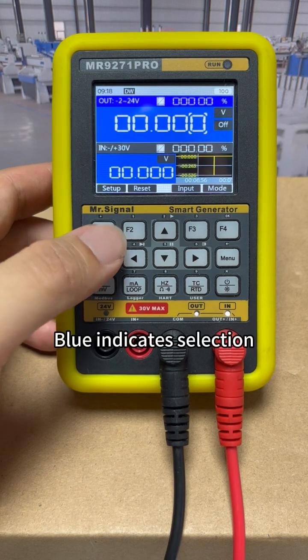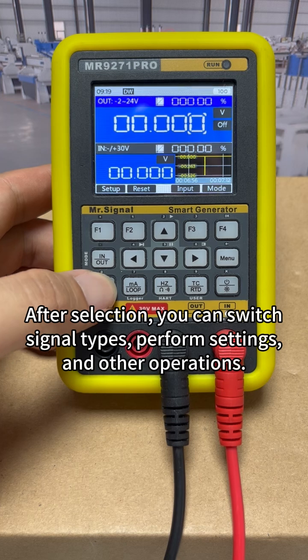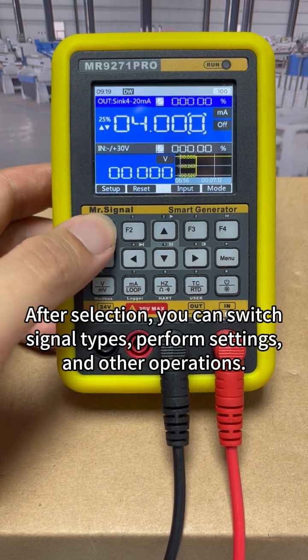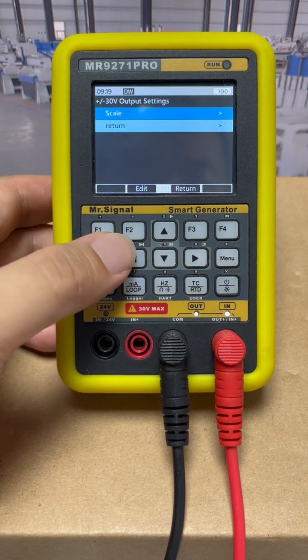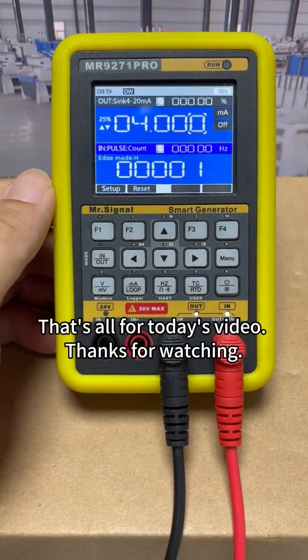Blue indicates selection. After selection, you can switch signal types, perform settings, and other operations. That's all for today's video. Thanks for watching.